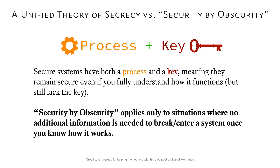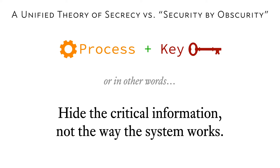Basically, for something to be secure, you need to have both a process and a key. Requiring a process and a key unifies the two definitions of obscurity. You want to make sure that when you use obscurity, you're hiding the key portion and not how the system works.